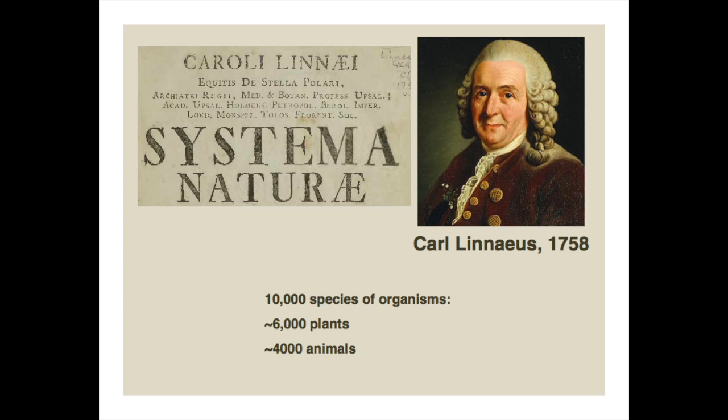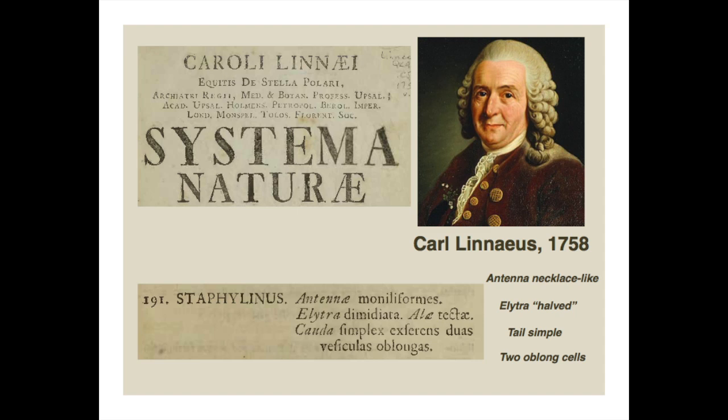The guy who really got the ball rolling in taxonomy is Carl Linnaeus. Systema Naturae from 1758, 10th edition, is widely believed to represent the beginning of this standardized format for describing new species. In Systema Naturae, Linnaeus described 10,000 species — 6,000 plants and 4,000 animals. But if you look at some of Linnaeus' descriptions, they're really simple. This beetle called Staphylinus has a species description of just 12 words, and there's no illustration in Systema Naturae of it.